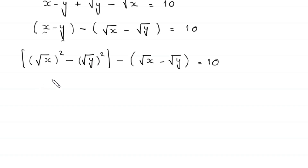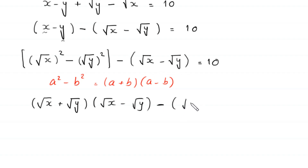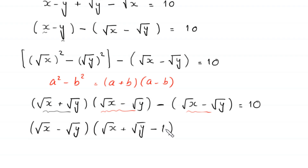We have a difference of two squares. Using the algebraic identity a squared minus b squared equals a plus b times a minus b, root x squared minus root y squared becomes root x plus root y times root x minus root y. So we factor out the common factor root x minus root y, leaving root x minus root y times root x plus root y minus 1 is equal to 10.